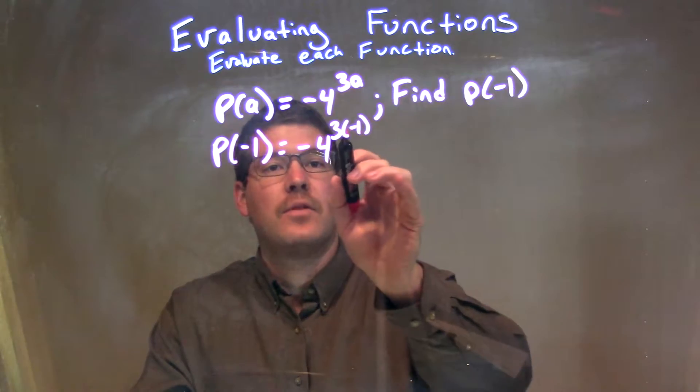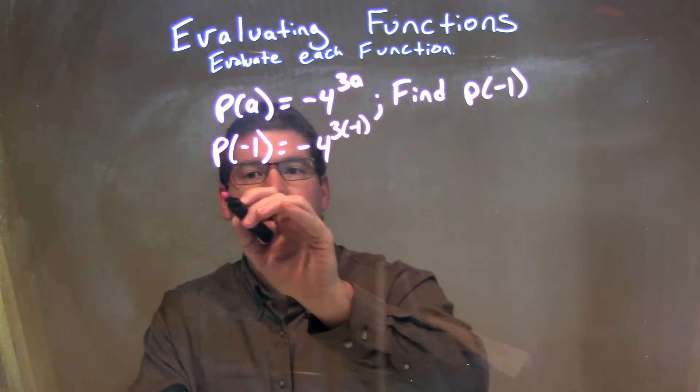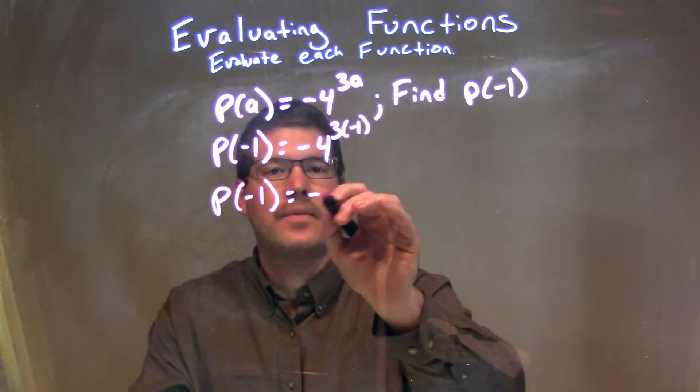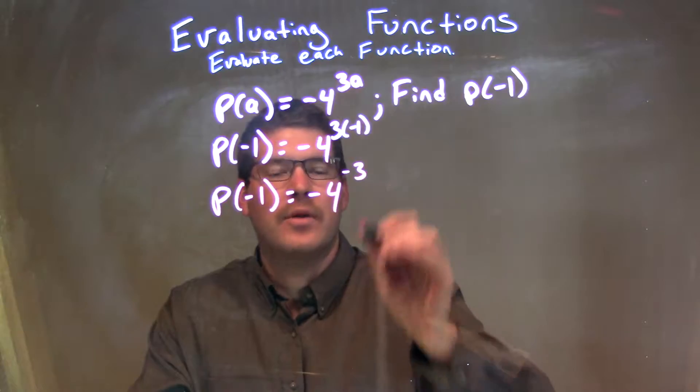So now let's simplify that. 3 times negative 1 is a negative 3. So we have P of negative 1, and we need to deal with the exponent first, negative 4 times a negative 3 up there.